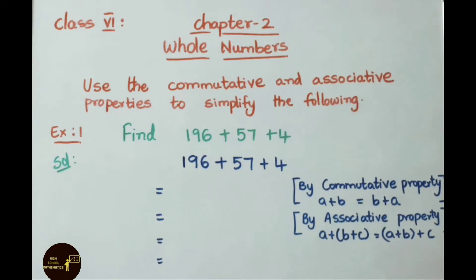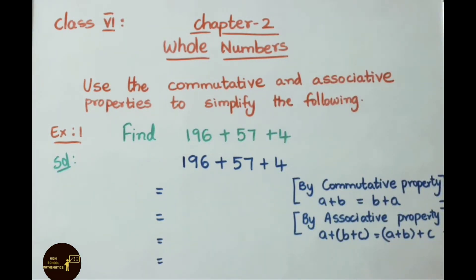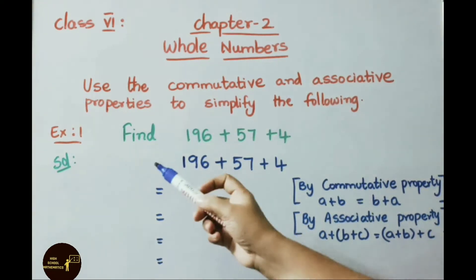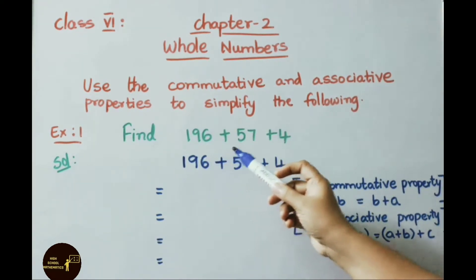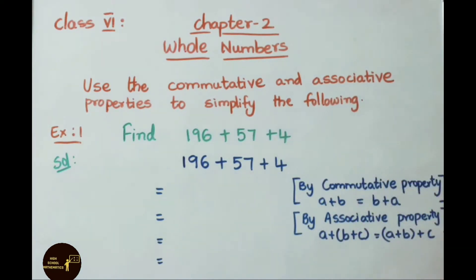Hello everyone, welcome to the High School Mathematics channel. Today we are going to learn Class 6 Chapter 2, Whole Numbers. We will work through examples on commutative and associative properties. See the first sum: find 196 plus 57 plus 4.